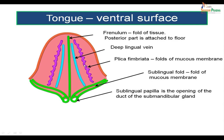Further laterally, there is a fold of mucous membrane called the plica fimbriata, seen on either side of the deep lingual veins. Posteriorly, there is the sublingual fold — a fold of mucous membrane running over and covering the submandibular duct, also called Wharton's duct. The sublingual papillae are two small openings on either side of the midline at the posterior part of the ventral surface, and they represent the opening of the submandibular gland duct.